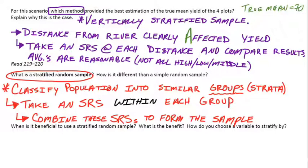Why is it beneficial to use a stratified random sample, and how do you choose what variable to stratify by — how do you make your groups? We saw this in the river example. The strata were the vertical columns, and it was more representative to get a little random sample from each one of those columns. That gave us a really good picture of the overall farm without having to sample every single plot individually.